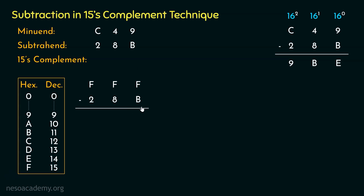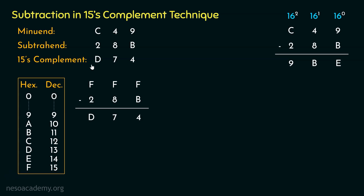Starting from the least significant digit: F minus B is 15 minus 11 = 4. Next, F minus 8 is 15 minus 8 = 7. For the most significant digit: F minus 2 is 15 minus 2 = 13, which is D in hexadecimal. So the 15's complement of 28B is D74.